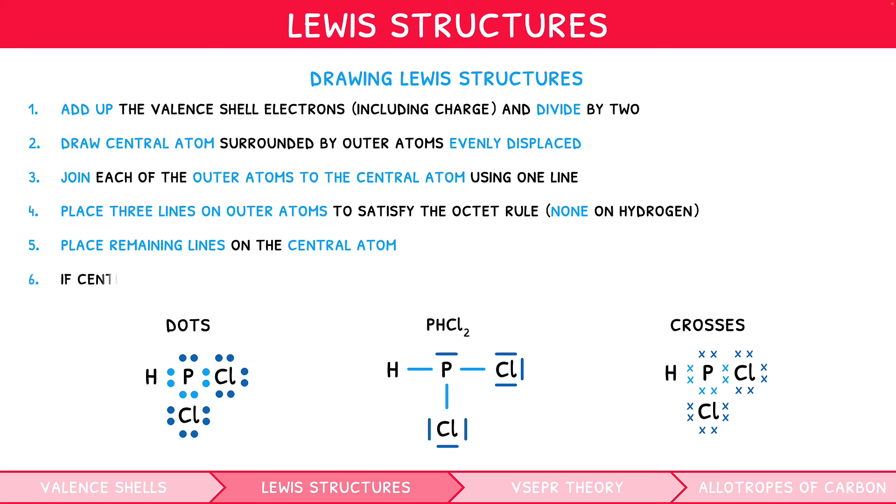When dealing with a central atom in period 3 or greater, it is important to check if the outer atoms can form double bonds. If so, the final stage of a Lewis structure is to move lines from the outer atoms to the central atom to form such bonds.